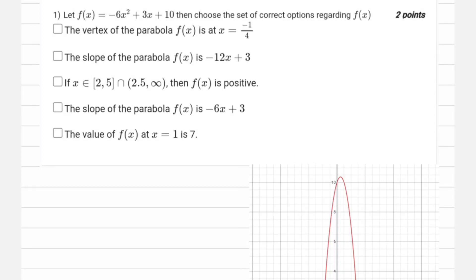So our first question of graded assignment 3 is let f(x) equals minus 6x² plus 3x plus 10. Then we have to choose the correct option out of all of these, so we are going to check all the options one by one.